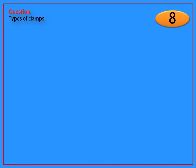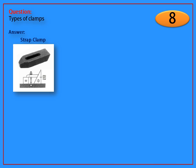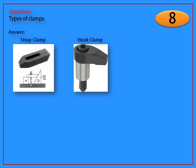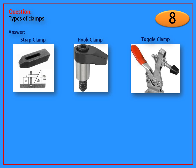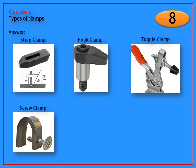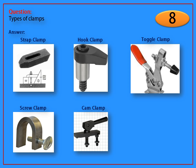Question: Explain about types of clamps. Answer: strap clamp, hook clamp, toggle clamp, screw clamp, cam clamp, and C-type clamp.